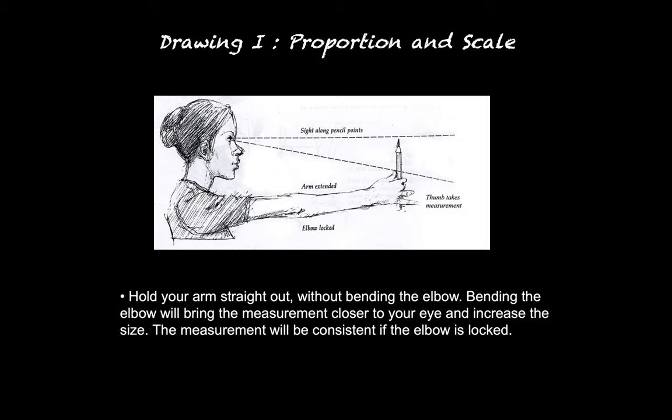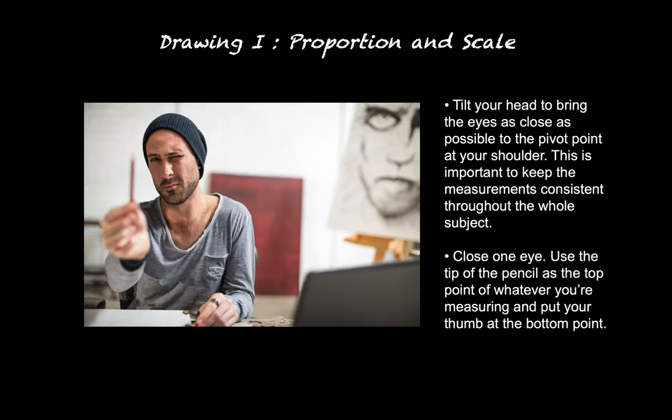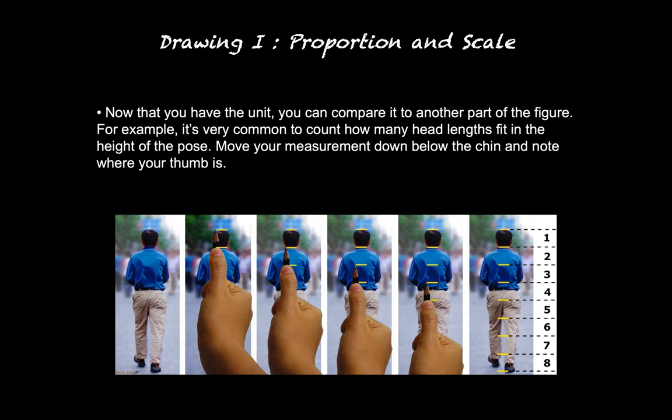Hold your arm out straight without bending the elbow. Bending the elbow will bring the measurement closer to your eye and increase the size. The measurement will be consistent if your elbow is always locked every time you measure different parts of what you are drawing. Tilt your head to bring the eyes as close as possible to the pivot point at your shoulder — this is important to keep the measurement consistent throughout the whole subject. Close one eye, use the tip of the pencil as the top point of whatever you're measuring, and put your thumb at the bottom point. Now that you have the unit, you can compare it to another part of the figure.